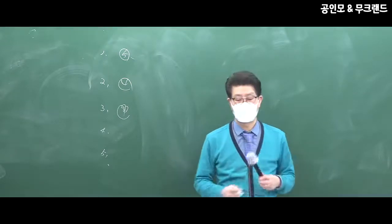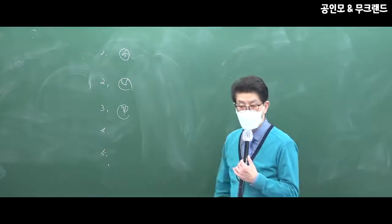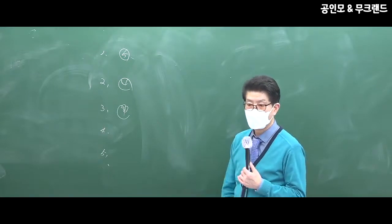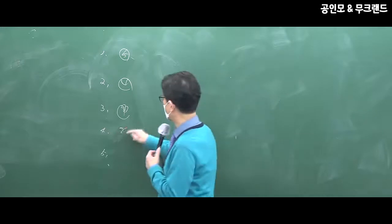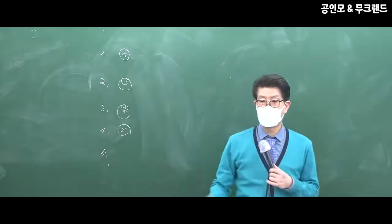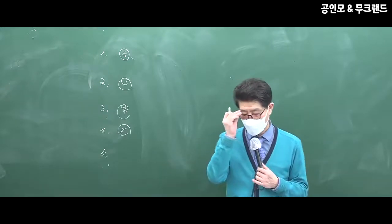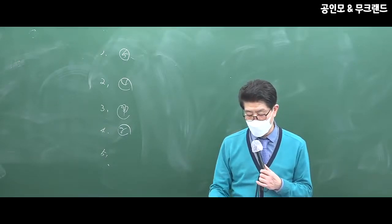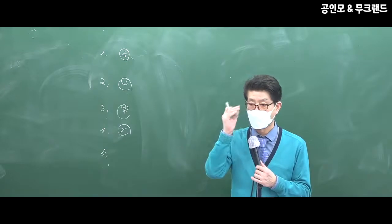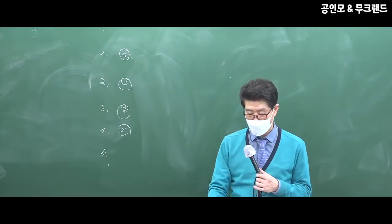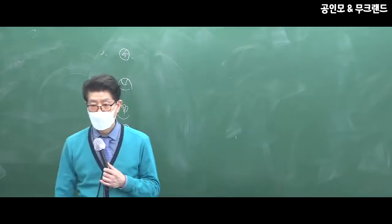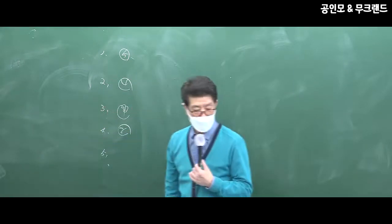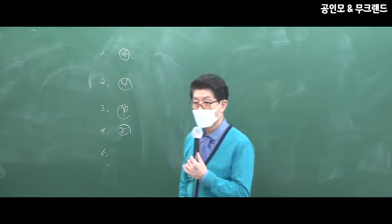4번, 틀린 것입니다. 1번은 맞죠. 1주택이라도 장기보유특별공제가 적용될 수 있다. 요건이 충족되면요. 답은 2번입니다. 장기보유특별공제는 토지, 건물, 조합원입주권에 한정하여 적용하는데, 조합원입주권이 빠졌네요. 한정하여 하나가 빠진 거예요. 그리고 미등기나 조정대상지역의 다주택자 주택은 제외됩니다. 토건에 조합원입주권이 빠져서 틀린 거예요. 답이 2번, 조합원입주권이 빠졌습니다.